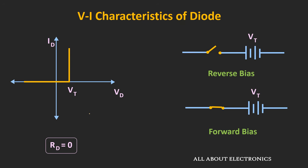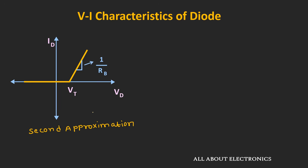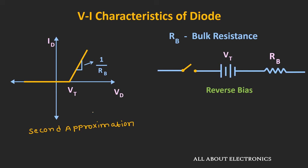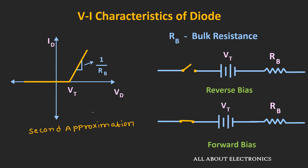Now let us consider the second approximation, where we also account for the diode's finite resistance. Looking at the VI characteristic in this case: up to the threshold voltage the diode offers infinite resistance (acting as an open switch), and after the threshold voltage it provides some finite resistance. That resistance can be found from the slope of the curve and is known as the bulk resistance or body resistance — it is the resistance offered by the semiconductor material from which the diode is made. The equivalent circuit now includes this bulk resistance Rb whenever the diode is conducting.